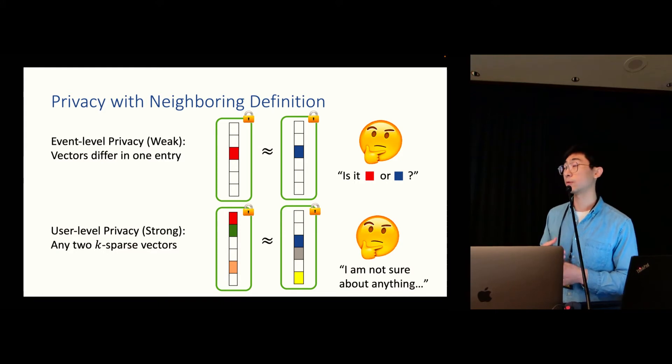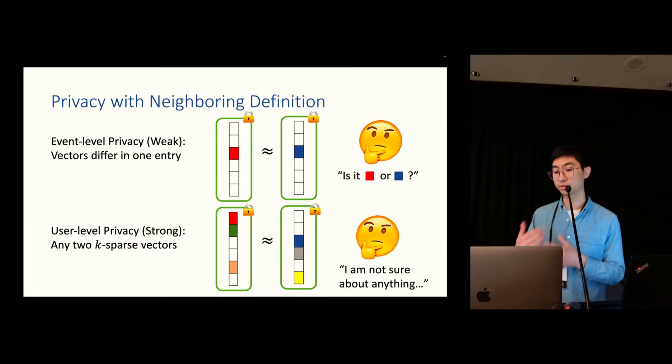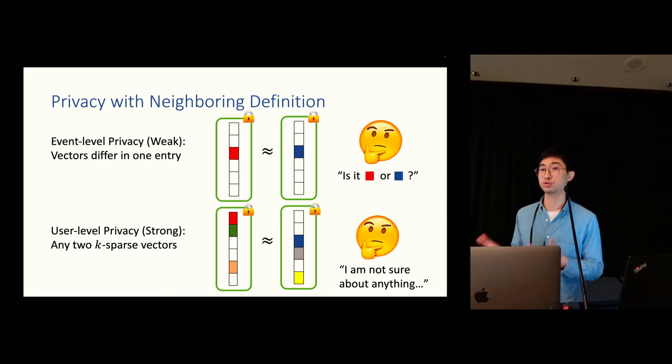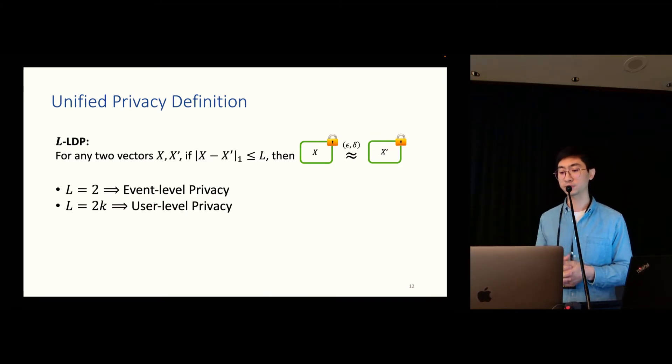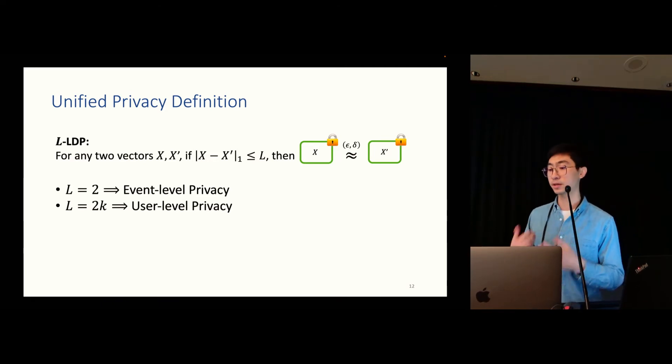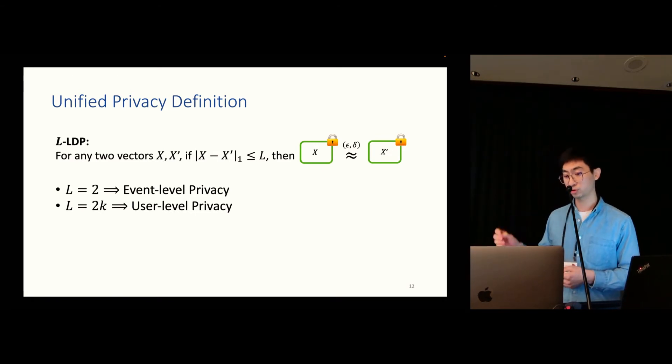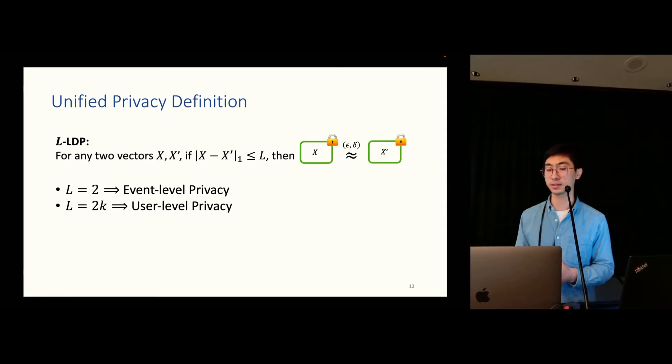A stronger level of privacy is called user level privacy. It says for any two k-sparse vectors, their encodings should be very similar. In this case, basically, the adversary cannot infer about anything from the original input. In our paper, we actually use a more unified privacy definition. It is called the L1-LDP. It says for any two vectors, X and X prime, if their L1 distance is bounded, then their encodings should be very similar. And actually, this unified privacy definition is pretty general. For example, L equals to 2 implies event level privacy, and L equals to 2K implies user level privacy. And in the middle ground, we have more flexible privacy definition.